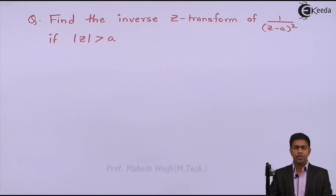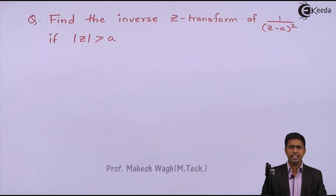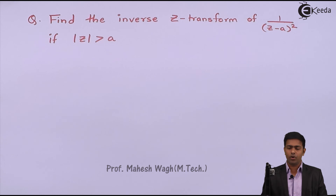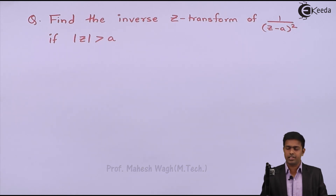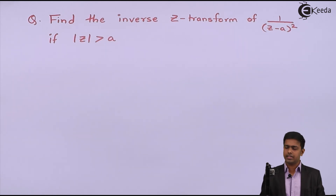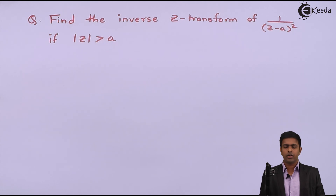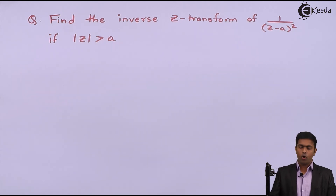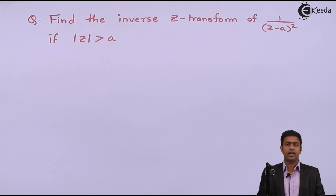Hello friends. In this video we have to find out the inverse Z transform of 1 upon (Z minus A) the whole square, if mod Z is greater than A.